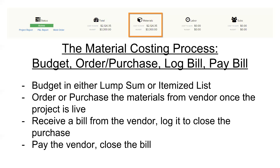A lot of what we like to talk about in NOAAFI is different processes. The NOAAFI job costing process is: budget, bid, track, and invoice. For material costing specifically, the process is: budgeting, ordering or purchasing the materials, receiving the bill, logging the bill in your system from the vendor, and then finally paying that bill.